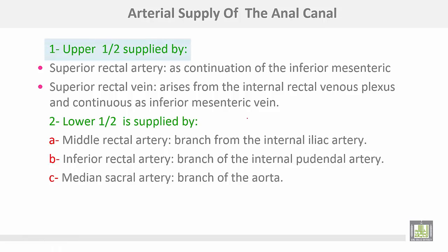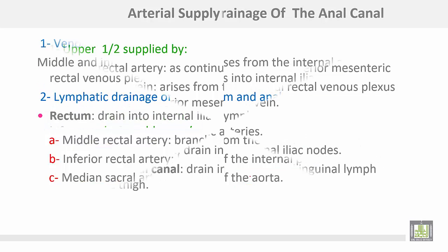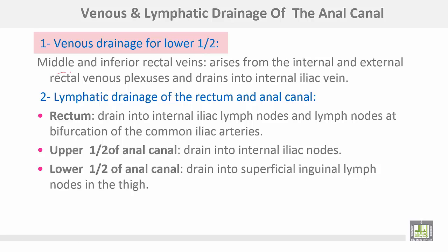Arterial supply of the anal canal: the upper half is supplied by the superior rectal artery, which is the continuation of the inferior mesenteric artery. Venous drainage for the upper half is through the superior rectal vein, which arises from the internal rectal venous plexus and continues as the inferior mesenteric vein. The lower half takes arterial supply from the middle rectal artery, a branch from the internal iliac; the inferior rectal branch from the internal pudendal; and the median sacral artery, a branch from the abdominal aorta. The venous drainage for the lower half is via the middle and inferior rectal veins, which arise from the internal and external rectal venous plexuses and drain into the internal iliac vein.